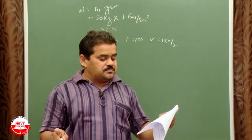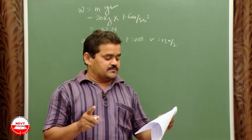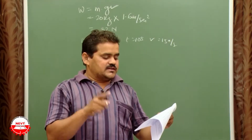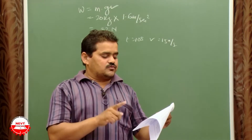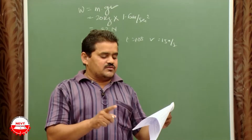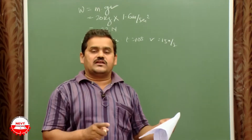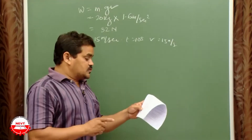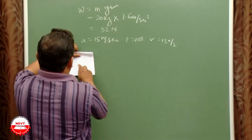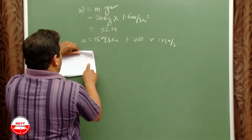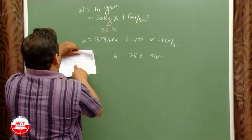Question number seven: A teacher asks three students A, B, C to prepare a 25% (mass by volume) solution of KOH. Student A dissolved 25 g KOH in 100 g water. Student B dissolved 25 g KOH in 100 mL water. Student C dissolved 25 g KOH and made the volume up to 100 mL. Which one has made the required 25% solution and why?